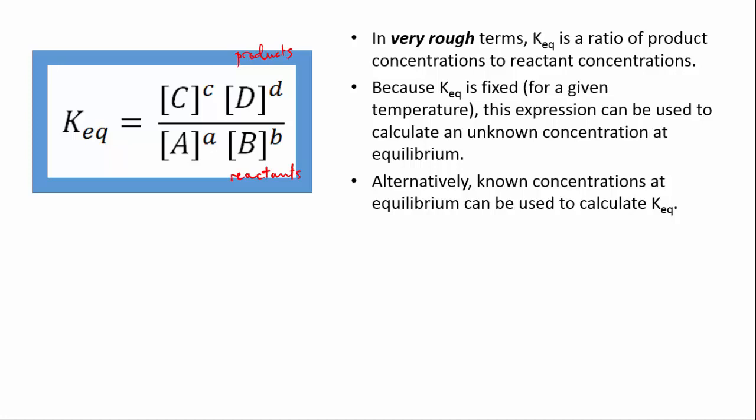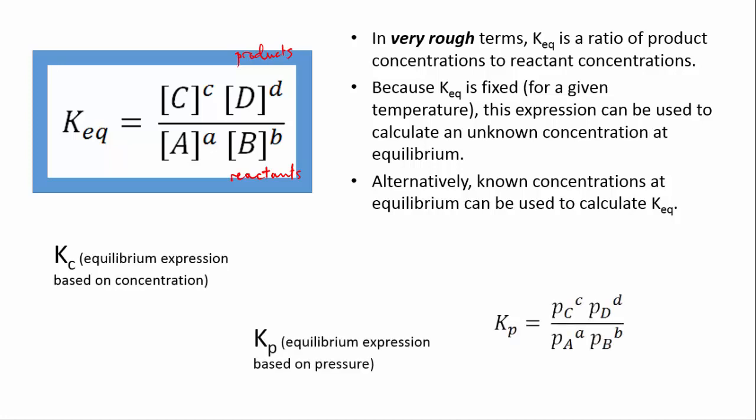Before we do, I need to point out some variations on KEQ. The constant in the expression above is written KEQ with a subscript EQ for equilibrium. But it's sometimes referred to as KC, where the C refers to concentration. And that's to indicate that that expression is written in terms of the concentrations of the species involved.